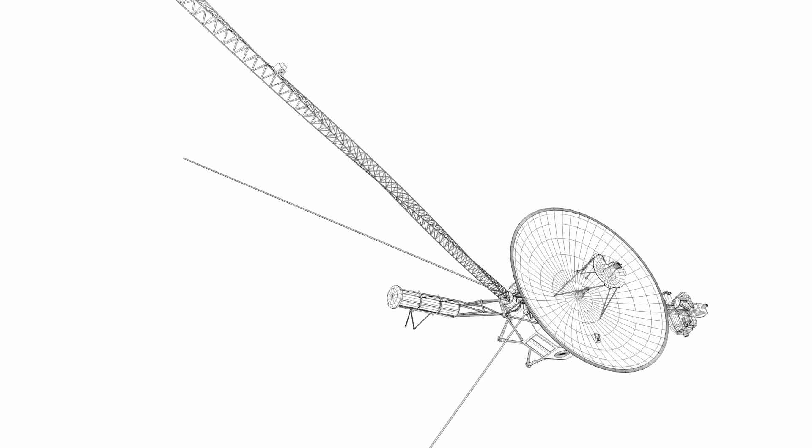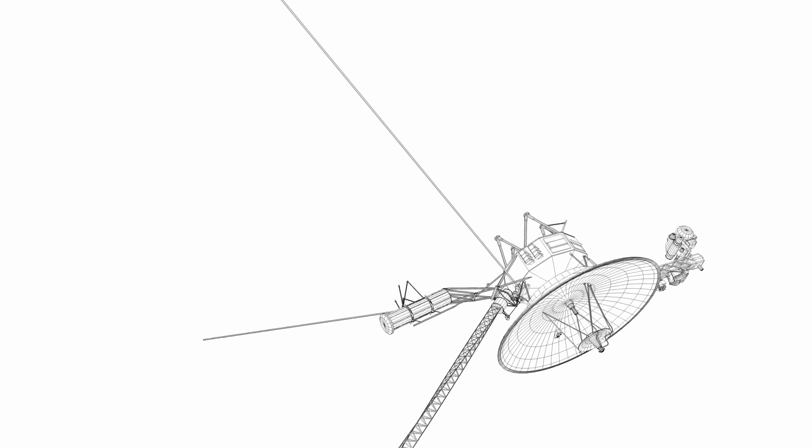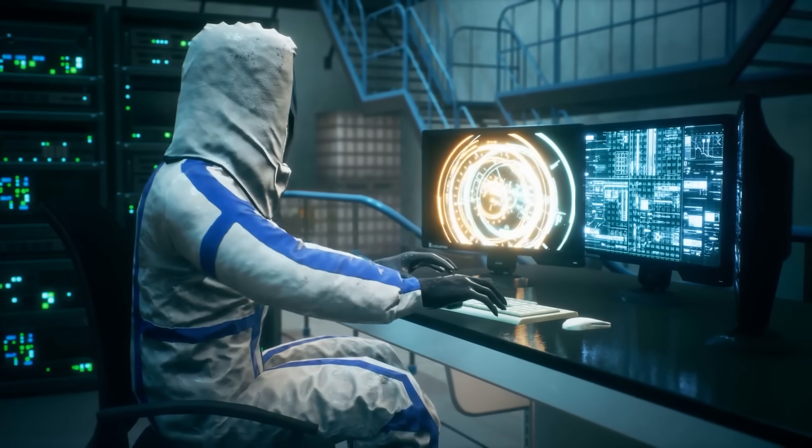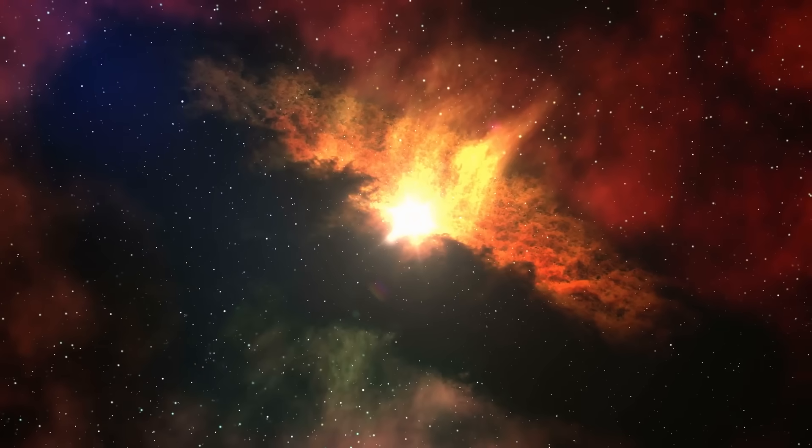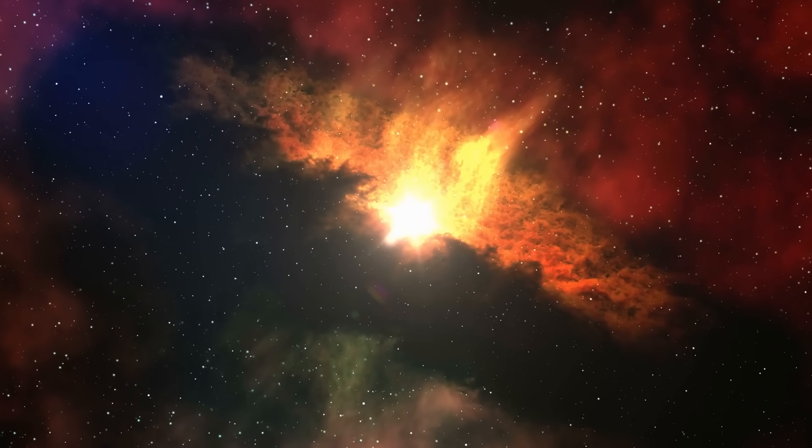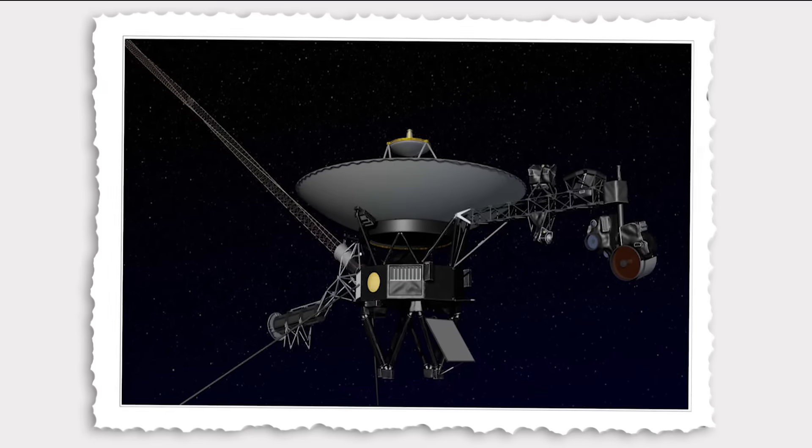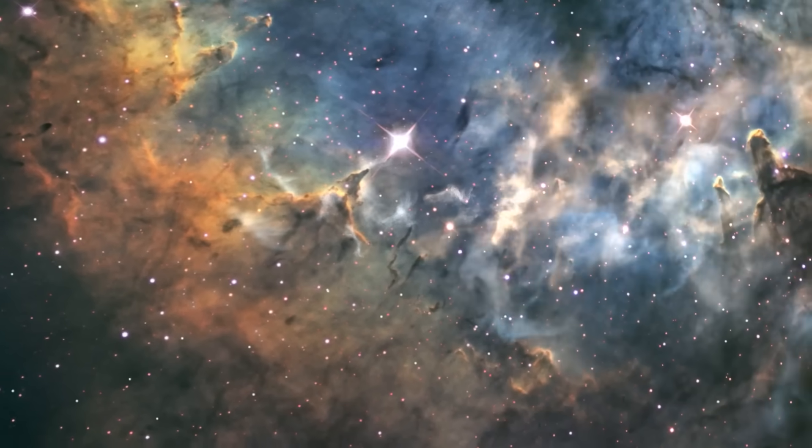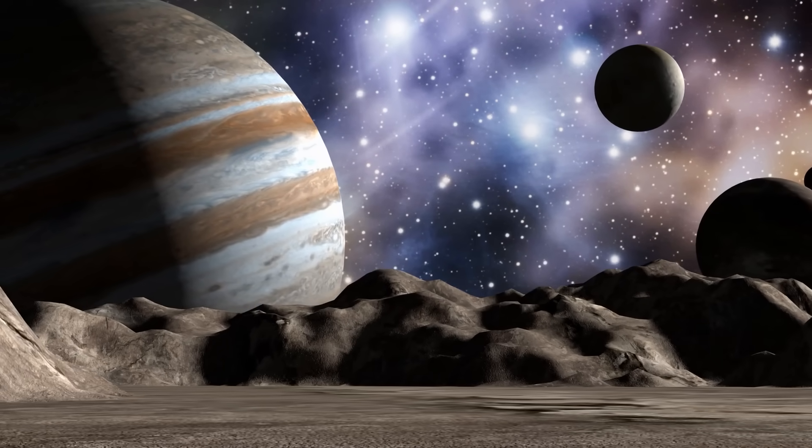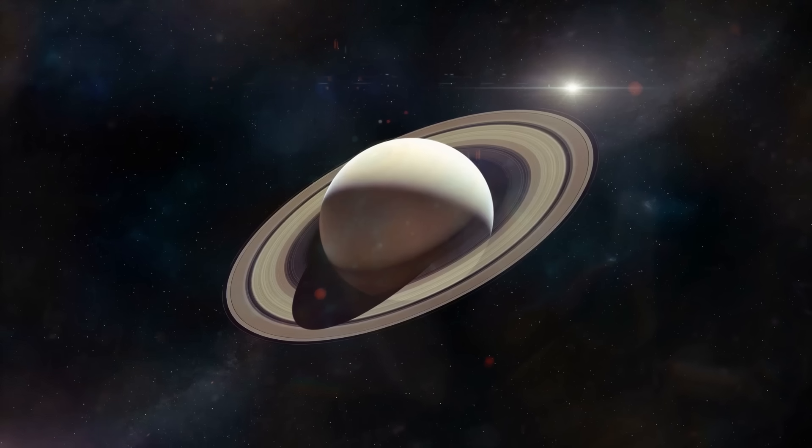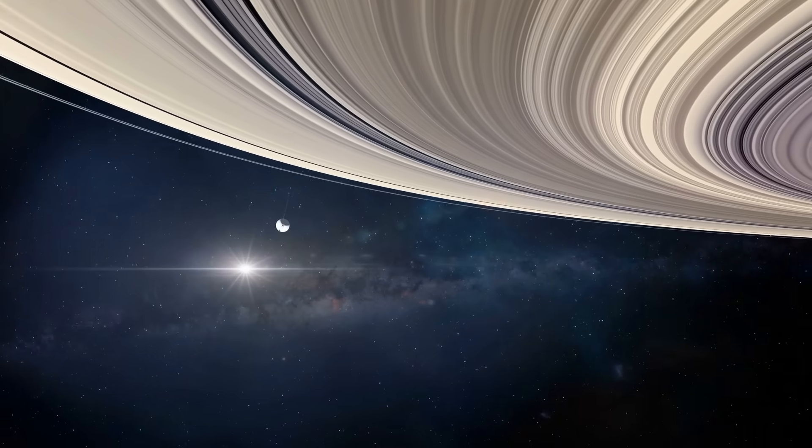Voyager 1's initial data transmission from this region was a first, despite the fact that scientists have been speculating about this interstellar medium for the past few decades. Together, the twin spacecraft Voyager 1 and 2 have now spent more than 40 years exploring space. Initially, their primary goal was to investigate Jupiter and Saturn. It was really just a quick mission.